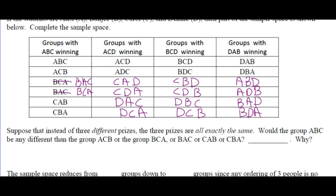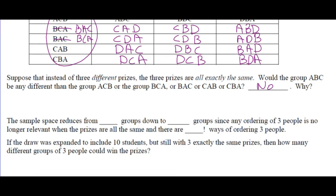Suppose instead of three different prizes, the three prizes are all exactly the same. Would the group A, B, C be any different from A, C, B or B, C, A or B, A, C or C, A, B or C, B, A? If the prizes are all the same, does it matter what order we hand them out? No — the order doesn't matter.